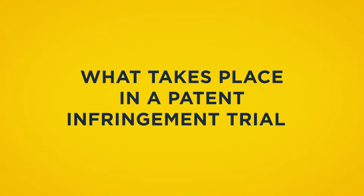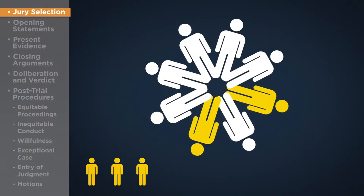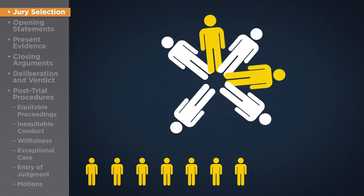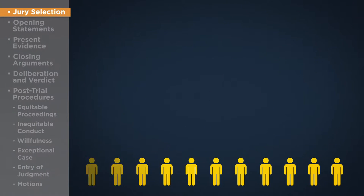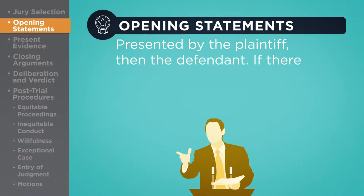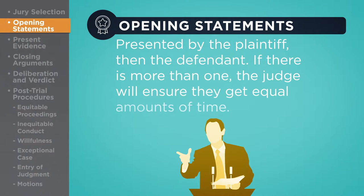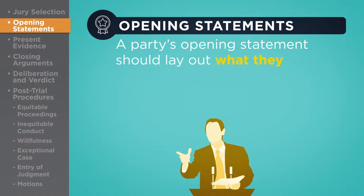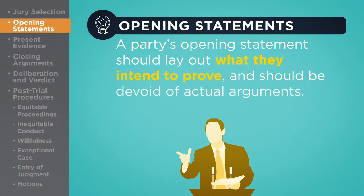What takes place in a patent infringement trial? The trial begins with jury selection from a group of prospective jurors. Opening statements are presented by the plaintiff, then the defendant. If there is more than one plaintiff or defendant, the judge will ensure they get equal amounts of time. A party's opening statement should lay out what they intend to prove and should be devoid of actual arguments.